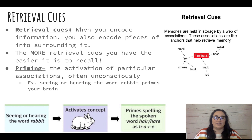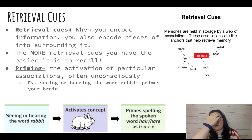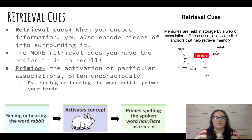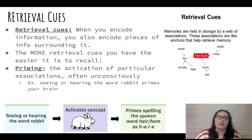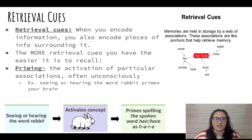Priming is a retrieval cue. If you're asked to spell the word 'hair' and you've just seen a rabbit or been talking about a movie with a rabbit character, even though you weren't consciously thinking about it, it might result in you spelling it H-A-R-E instead of H-A-I-R. Priming activates particular associations on an unconscious level.